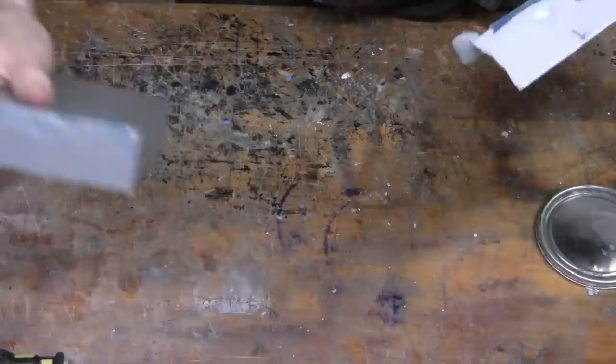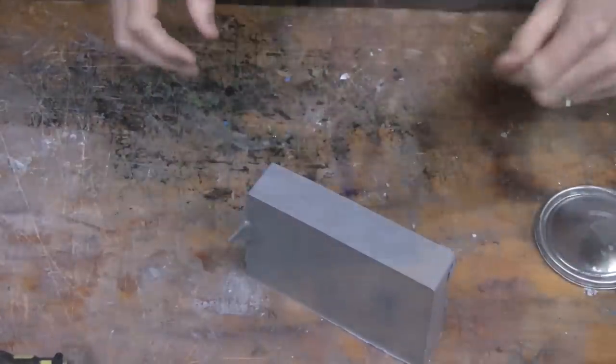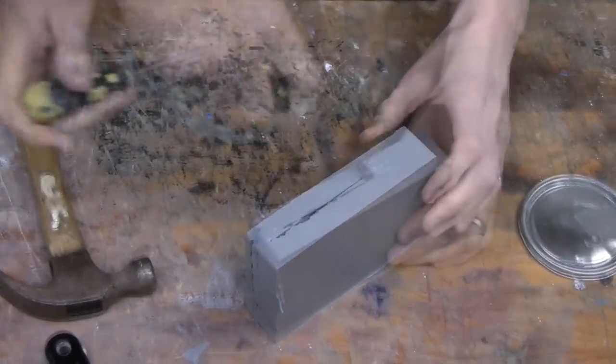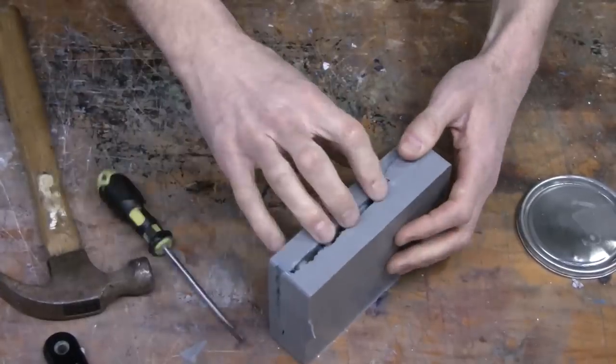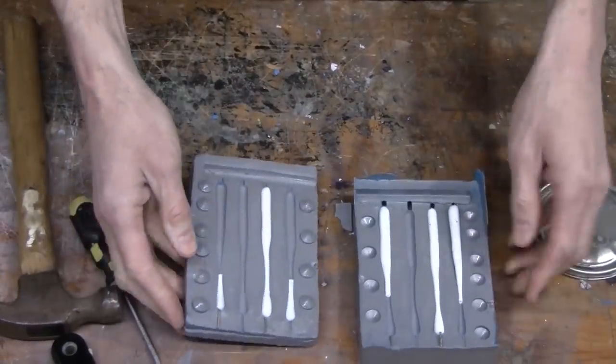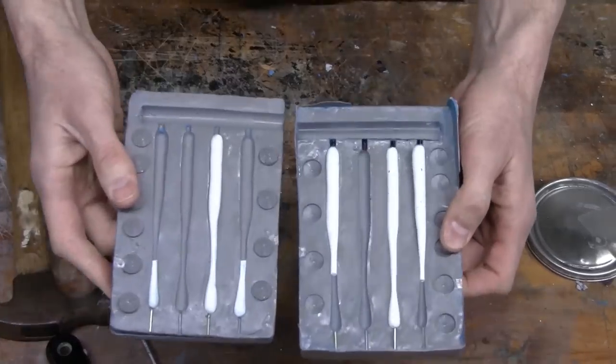The trick to demolding is finding the seam line. You may have to take off some of the flash where the VAC50 flowed in between the mold box and the first half of the mold. Use a screwdriver or a putty knife and tap gently with a hammer to pop the seam line. The two halves should separate fairly easily.